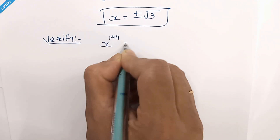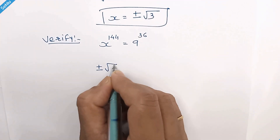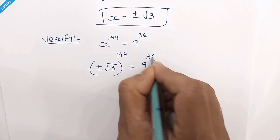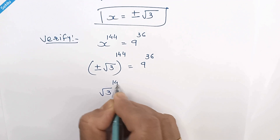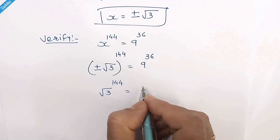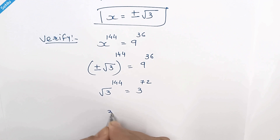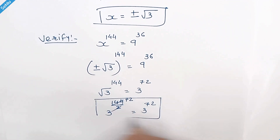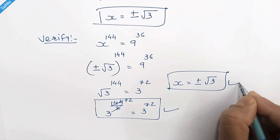Putting x equal to plus or minus square root of 3 into the question: since 144 is an even number, the result will be positive. Square root of 3 to the power 144 equals 9 to the power 36, which is 3 to the power 72. This can be written as 3 to the power 144 over 2. So x is equal to plus or minus square root of 3 is the correct answer. Thanks for watching.